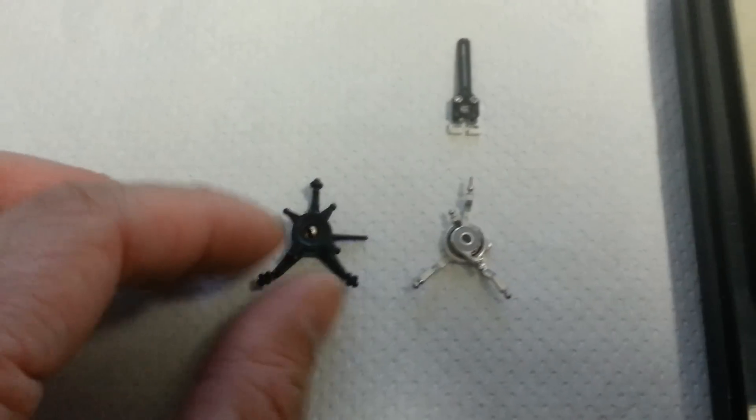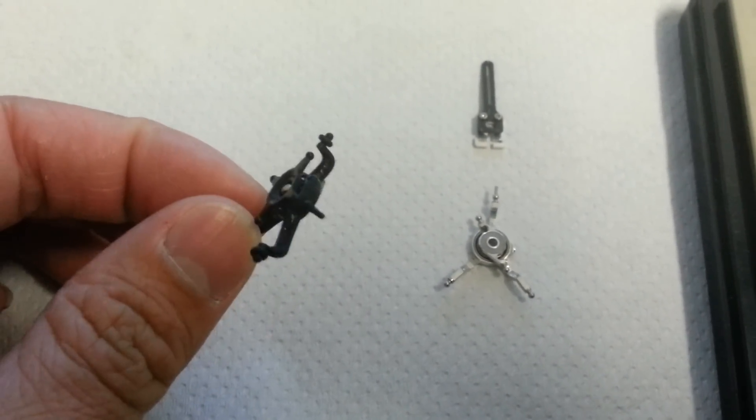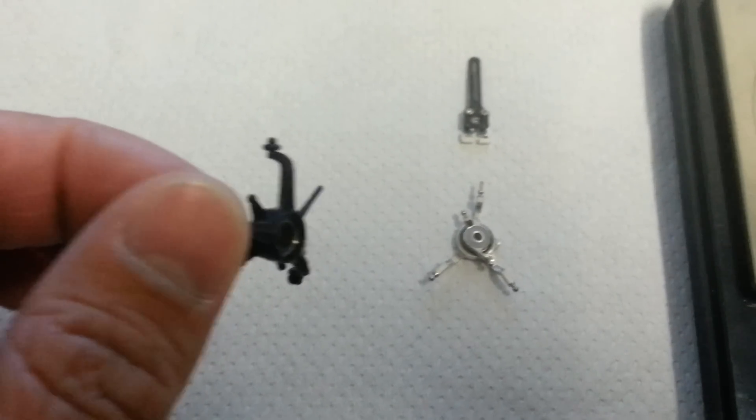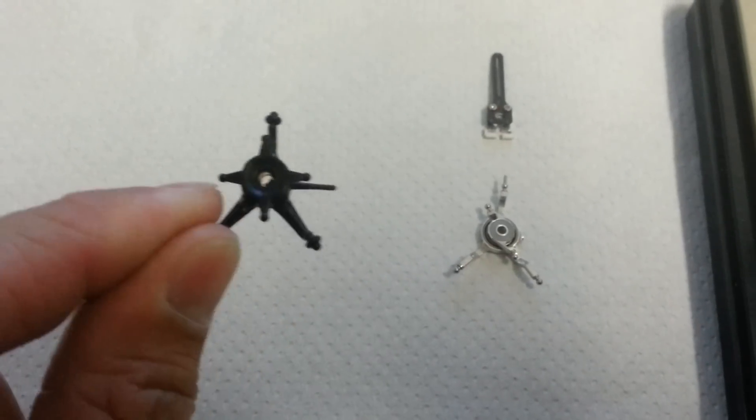The stock swash, and you can see my stock swash is a little beat up. You can see how the arms are starting to bend. So I CA'd them back to make it stronger, and it's been working, but it's starting to wear and tear. So it's starting to fall apart, so you can see it's a little bent.